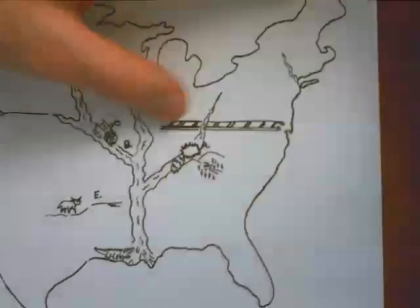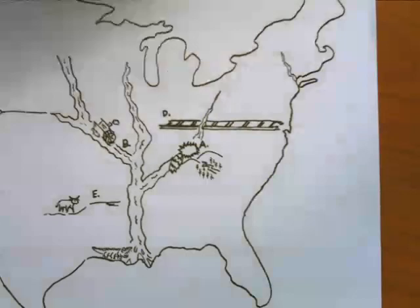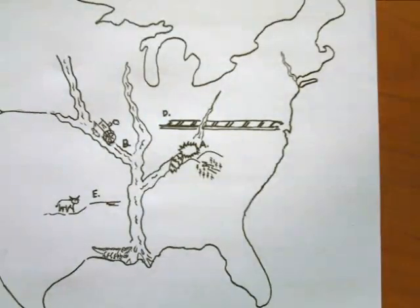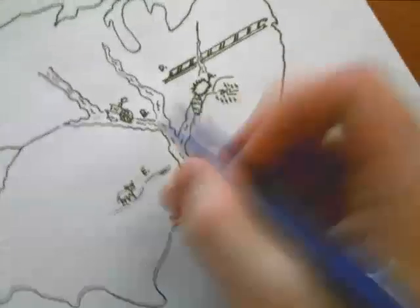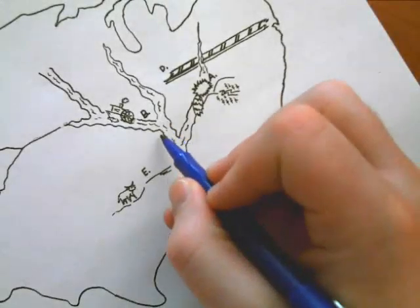From Daniel Boone and the Cumberland Gap, we are now going to start talking about upstream travel on the Missouri River. The Missouri River met up with the Mississippi River near St. Louis, Missouri.